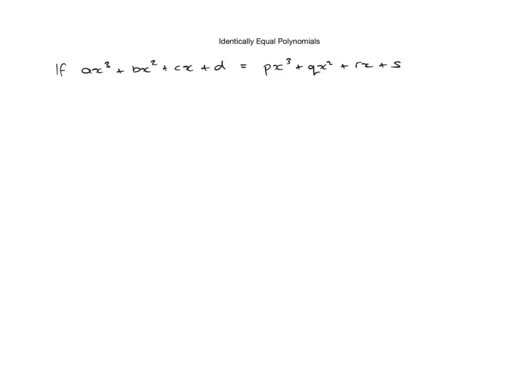So as you can see on the screen there, if ax³ + bx² + cx + d = px³ + qx² + rx + s, then we obviously have an equation. The equal sign tells us that this is an equation.